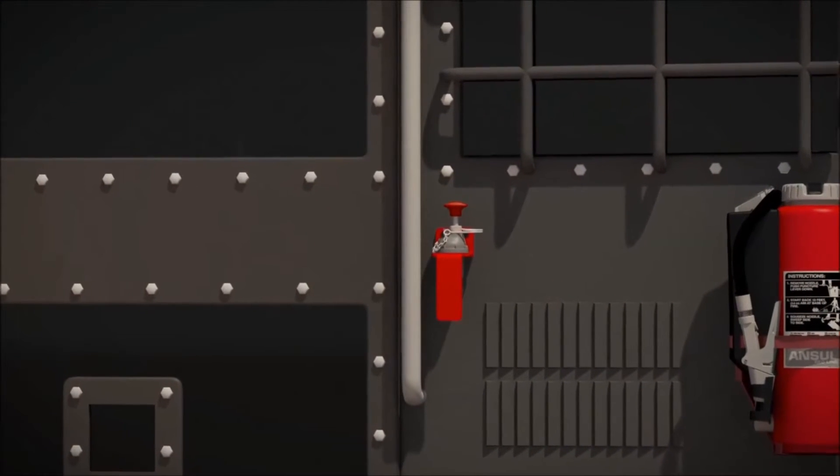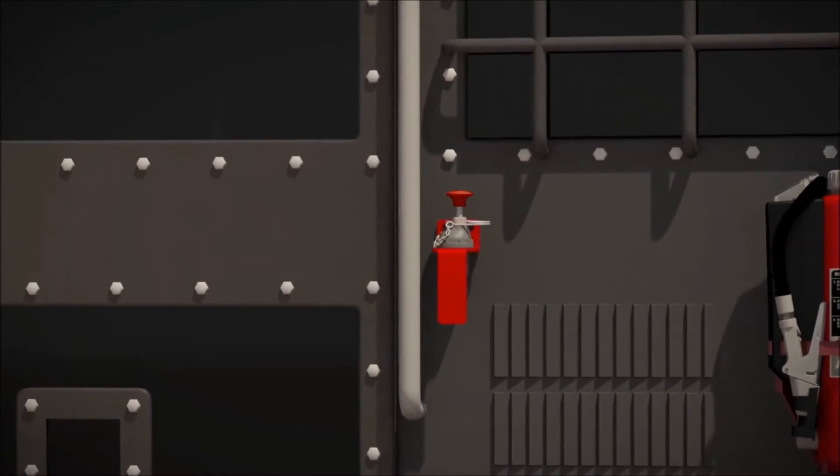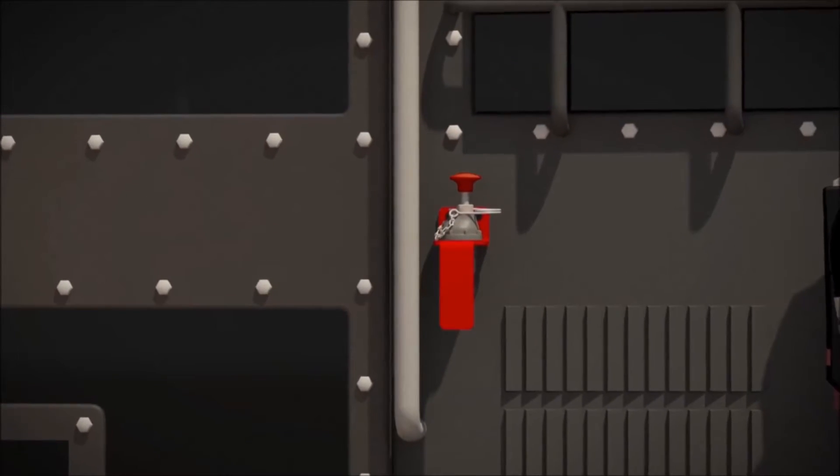The electric manual actuator or EMA provides an additional means of manual actuation and is located along paths of egress.